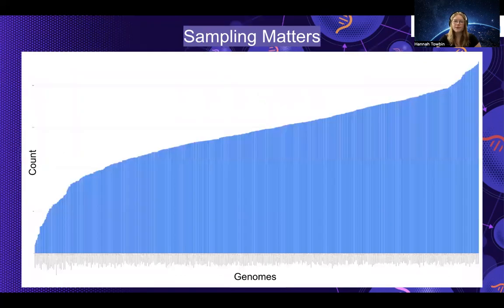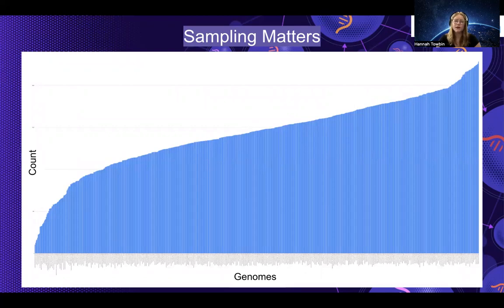We also took a look at the genomes themselves and how many times they were used in these COGs. What we found is that the genomes that were used the most are the ones that are actually studied most in science. The genome most used, in fact, was E. coli.